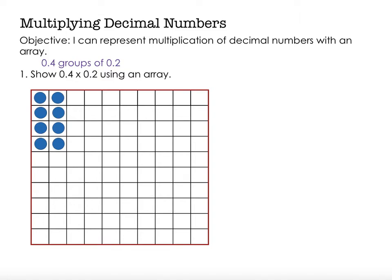And you can see my product only takes up eight of those squares. So when I find four tenths groups of two tenths, then I have a product of eight hundredths. So 0.4 × 0.2 = 0.08.